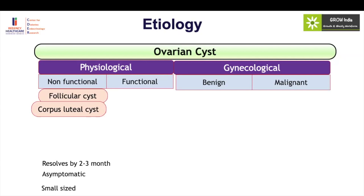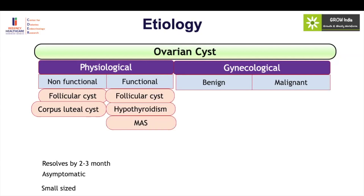A functional ovarian cyst is a follicular cyst that is still producing estrogen. It causes disturbance in the menstrual cycle, making it irregular. For a menarchal girl and a pre-pubertal girl, they may present with temporary precocious puberty or isolated vaginal bleeding. Functional cysts can also be present along with McCune-Albright syndrome, which is an activating mutation causing the ovaries to produce recurrent cysts. In hypothyroidism, very high TSH can act on the FSH receptor, leading to formation of functional ovarian cysts that produce estrogen, causing peripheral precocity and possibly recurrent vaginal bleeding.